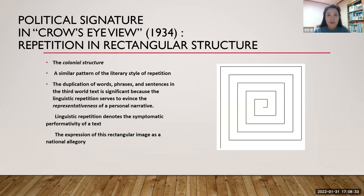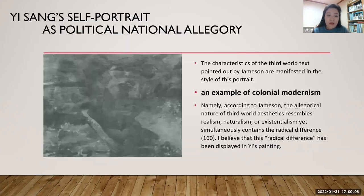The colonial repetition is about the colonial structure. Colonial repetition is the duplication of words, phrases, and sentences in the third world text. This is significant because this linguistic repetition serves to evince the representativeness of a personal narrative. Colonial repetition is the symptomatic performativity of a text. And in Ogamdo, this rectangular structure produced by colonial repetition functions as a political national allegory. In the conclusion of this article, you will see a painting — a self-portrait of Yi Sang — as an example of colonial modernism.